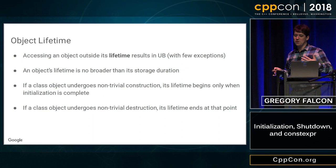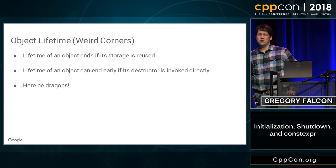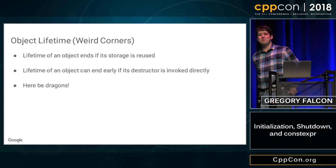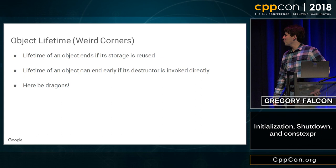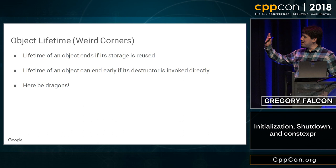There are a couple of other corner cases with object lifetime. You can end the lifetime of an object by reusing its storage — if you use placement new to stomp over the bits of an object and put a new object in its place, the old one dies. You can also explicitly call a destructor. But these are the sorts of things you're doing if you're writing a core library or a low-level container type. If you're playing these games, you really need a deep understanding of object lifetime, aliasing rules, and all this stuff — there are dragons there and you shouldn't mess with it.